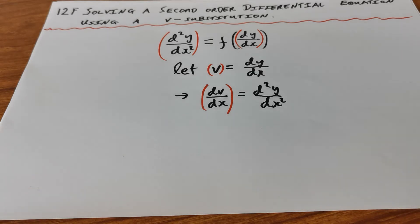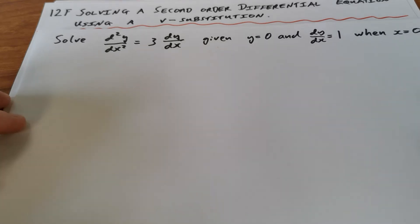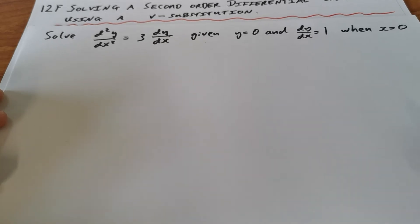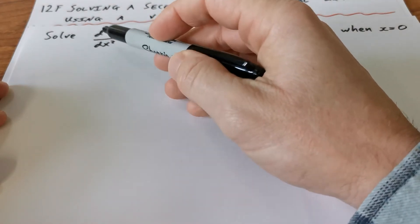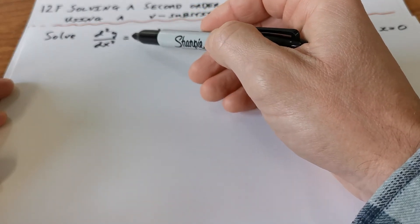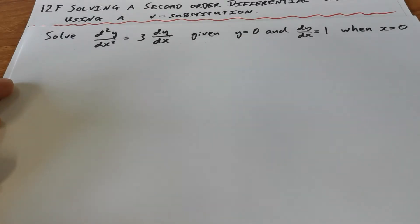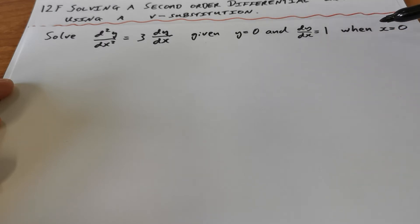I'll go through one example now. The question says: solve d²y/dx² = 3·dy/dx, given y = 0 and dy/dx = 1 when x = 0. It's a second-order differential equation because it contains a second derivative, and the second derivative equals 3·dy/dx, so the second derivative is a function of the first derivative. We're given initial conditions y = 0 and dy/dx = 1 when x = 0.